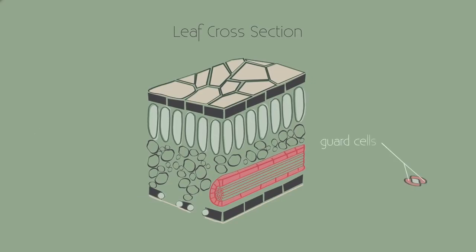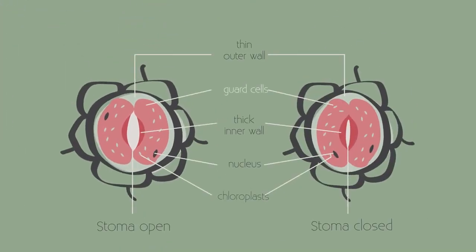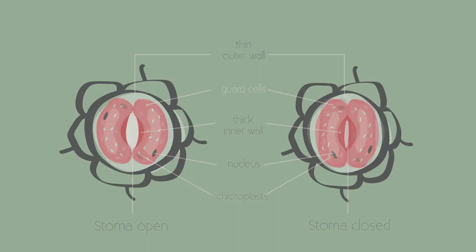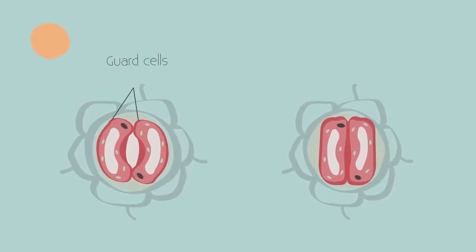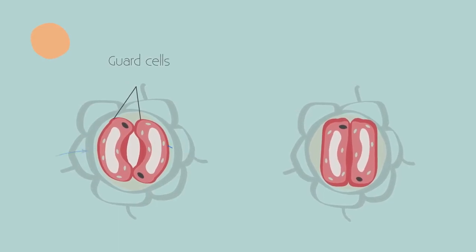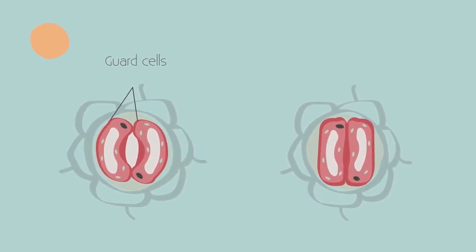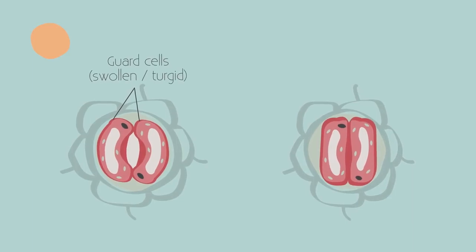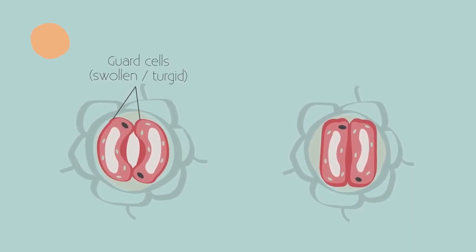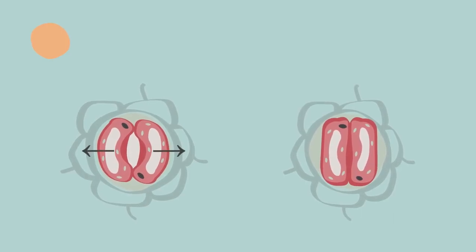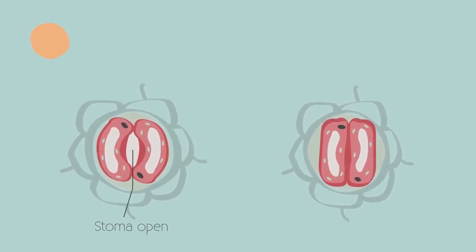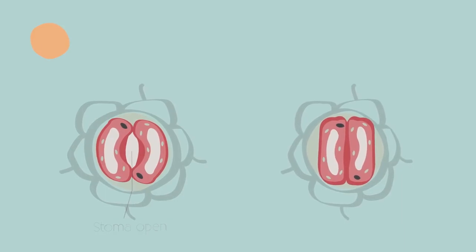There are guard cells on either side of the stomata, which regulate this. During daylight hours, chloroplasts produce sugar. This lowers the water potential of the guard cells, and they take in water by osmosis. This makes the guard cells turgid. Because the guard cells have a different cell wall thickness, when turgid, they bend more on the outside into sausage shapes. This opens the stomata, or the pore. Water can then be lost.